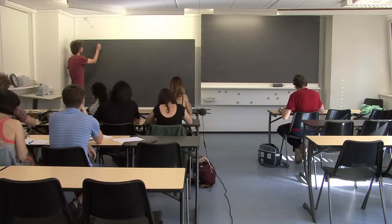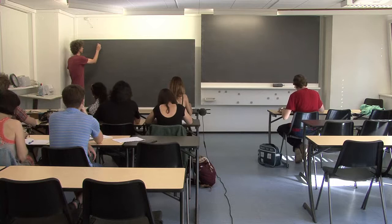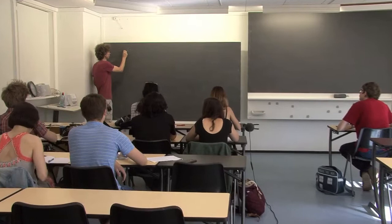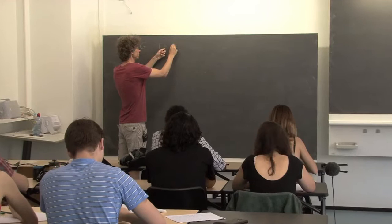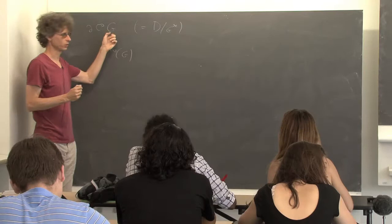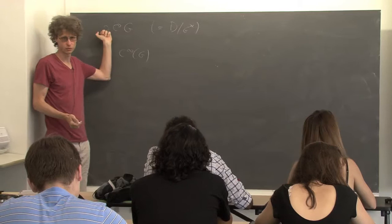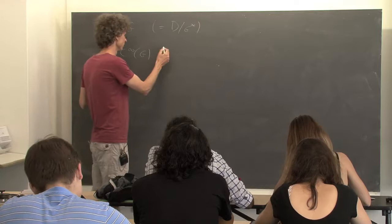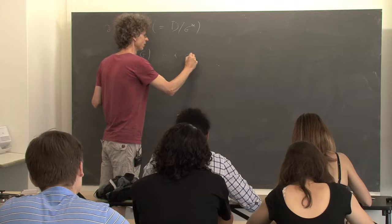If you remember, there was this statement: on G, when this is a Poisson group, there is an action of the Drinfeld double that came from just imagining this as D-mod of G-star, at least locally. So then what we could do — we took the algebra which is in the category of representations of D.